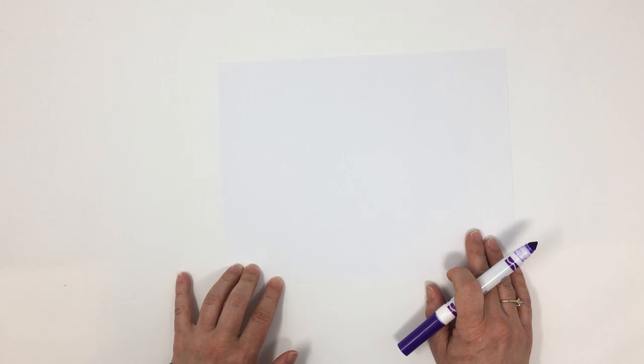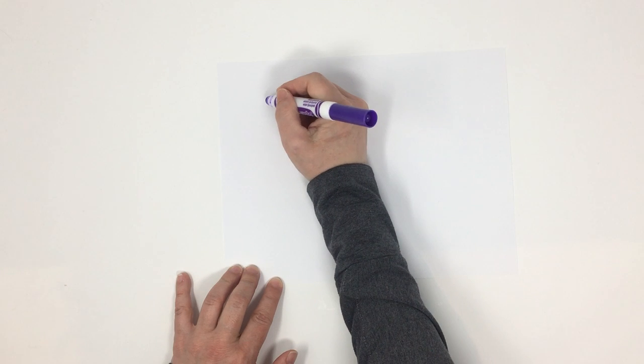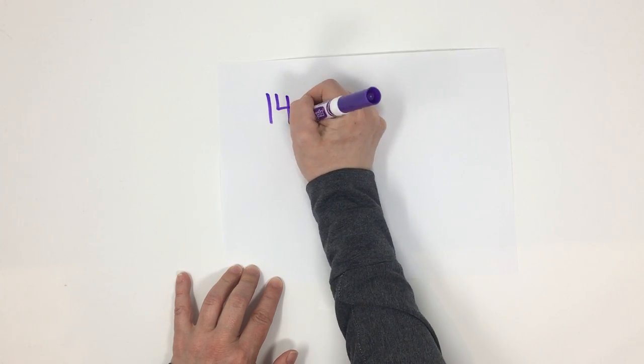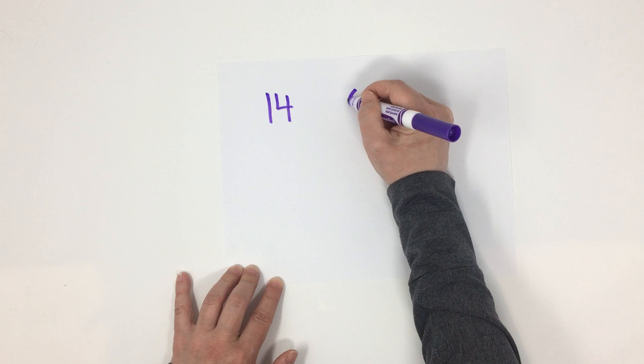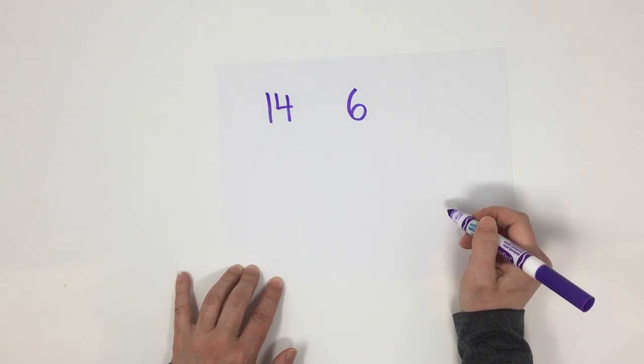Bonjour les amis! Today we're going to be dividing. So, let's say I have 14 candies and I have 6 friends. How would I figure out how many candies each friend should get?